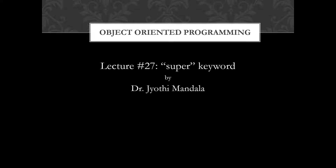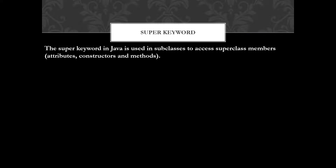The super keyword, whenever we are going to use it, is used to access the super class members. Whenever you are using the super keyword in a subclass, it will be used to access the super class members only — meaning the variables, constructors, or methods of the super class. In the subclass we can access those super class members simply by writing super.